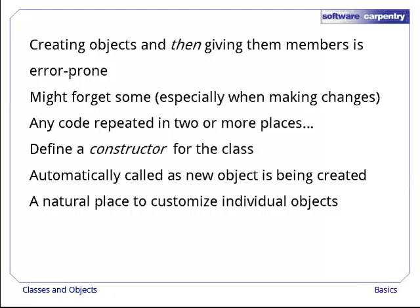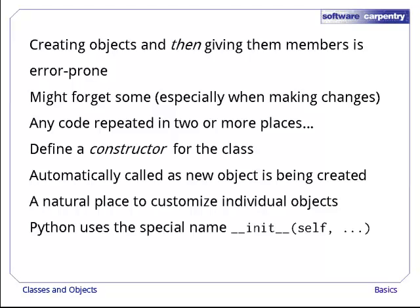Every language has its own syntax for defining constructors. In Python, we signal that a method is a constructor by giving it a special name, double underscore init double underscore. As with other methods, the first argument is self, which will refer to the object that's being created. Any other parameters can then be passed in after it.